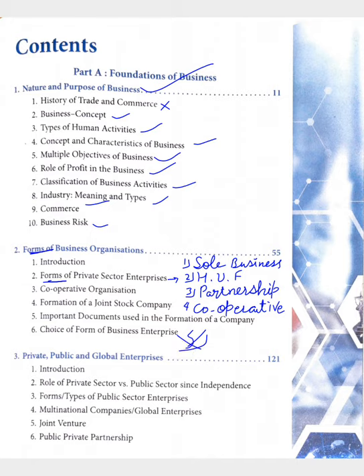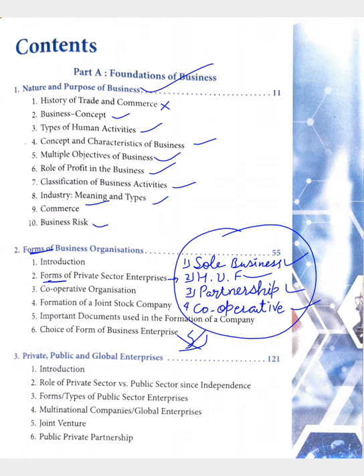The first form is sole proprietorship business. Second is Hindu Undivided Family business. Third is partnership, and fourth is cooperative societies. You have to learn all these four types with their merits and demerits.